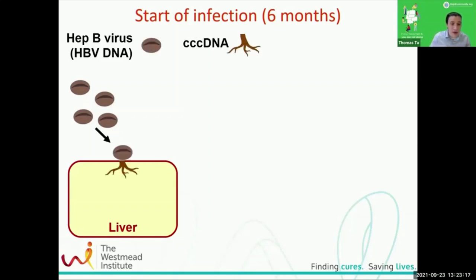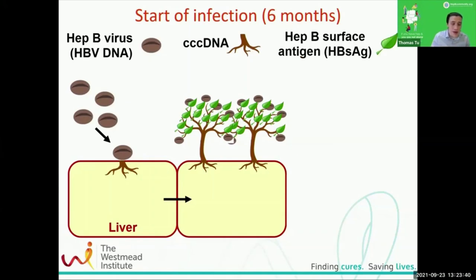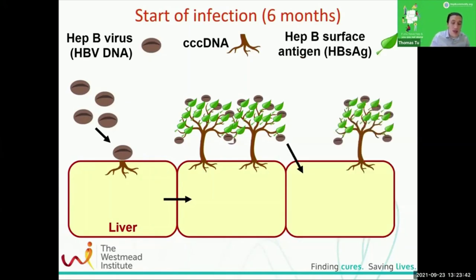The first thing Hepatitis B does is form CCC DNA — it sticks its roots into the liver. From that, it sprouts and produces more of itself, more Hepatitis B virus. Those seeds that come from newly infected cells go on to infect neighboring cells, and we get a whole lot of production of virus.